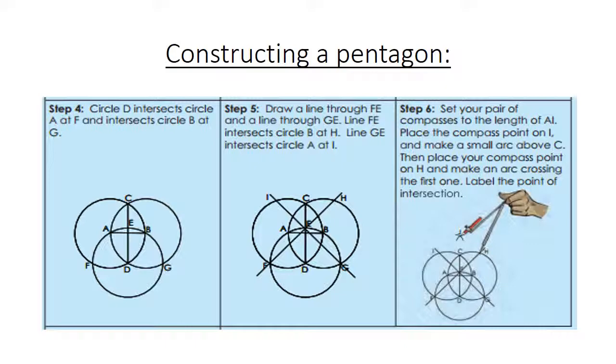Step number 5. Now you draw a line through FE and a line through GE. Line FE intersects circle B at H, and line GE intersects circle A at I.